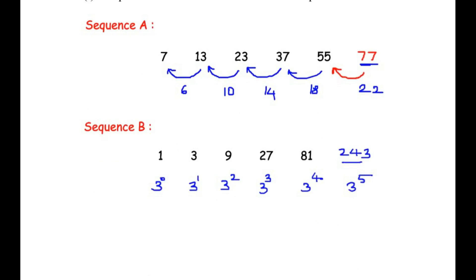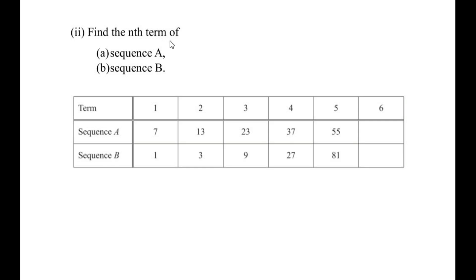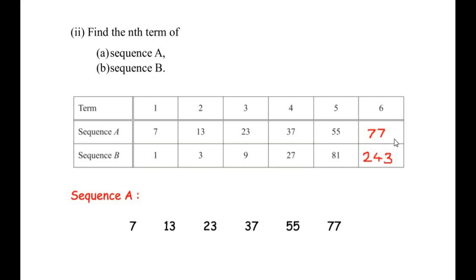Now let us look at the next question: find the nth term of sequence A and sequence B — the same sequences from the previous question. We have to find a formula for the nth term, so it could work for the 100th term, the 1000th term, and so on. Let me start with sequence A, including the sixth term we just calculated.